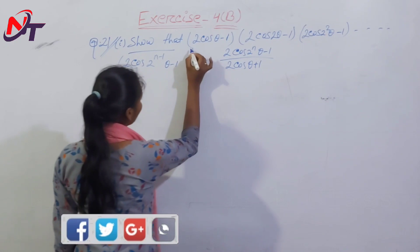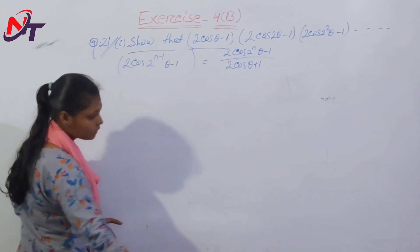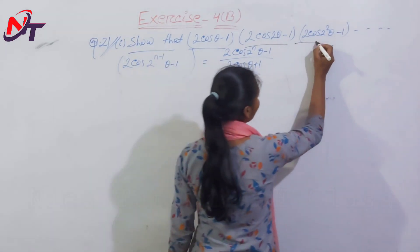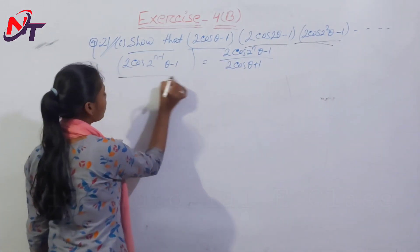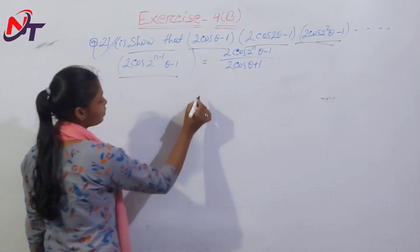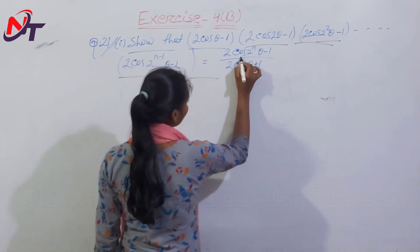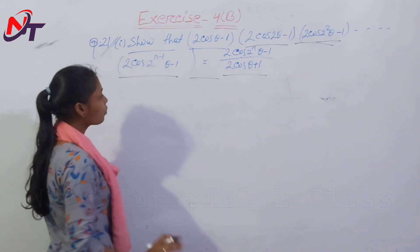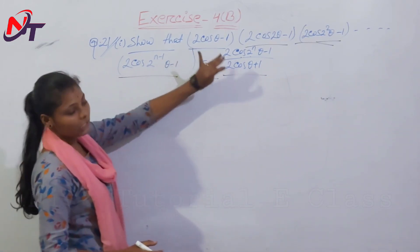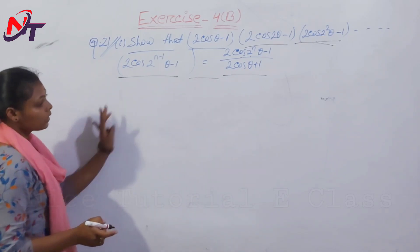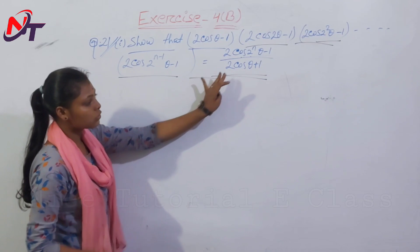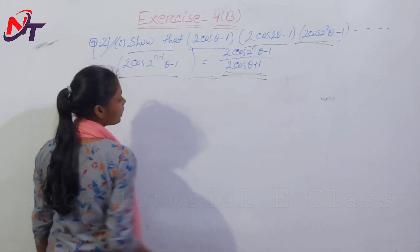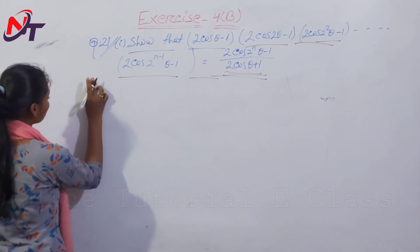So that: (2 cos θ − 1)(2 cos 2θ − 1)(2 cos 2² θ − 1) up to (2 cos 2^(n−1) θ − 1) equals (2 cos 2^n θ − 1) divided by (2 cos θ + 1). We need to prove this. In order to prove it, we consider (2 cos 2^n θ − 1) divided by (2 cos θ + 1).